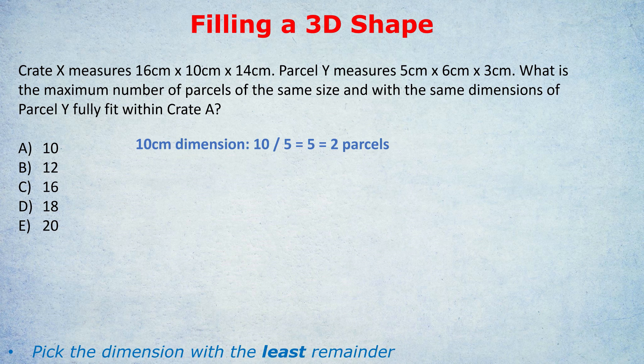10 divided by 5 is 2 parcels. But now we have a choice. The 16 doesn't divide by the 6 or the 3. And the 14 dimension which we've got left also doesn't divide by the 6 or the 3. So what do we do? Well, let's think about the two scenarios we've got. We can either divide the 16 by the 6 and the 14 by the 3. Or we divide the 16 by the 3 and the 14 by the 6. Which way round shall we do it?